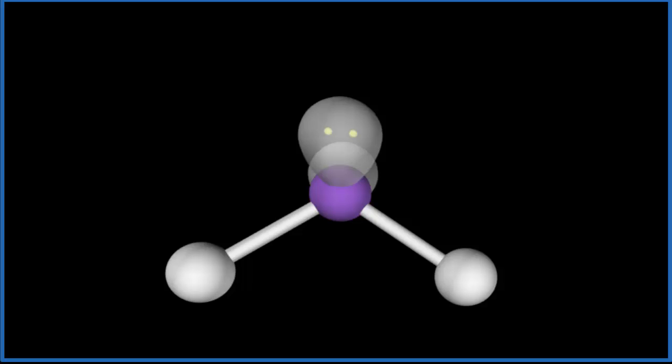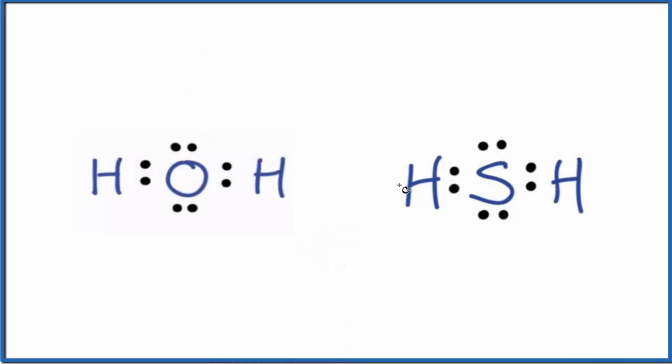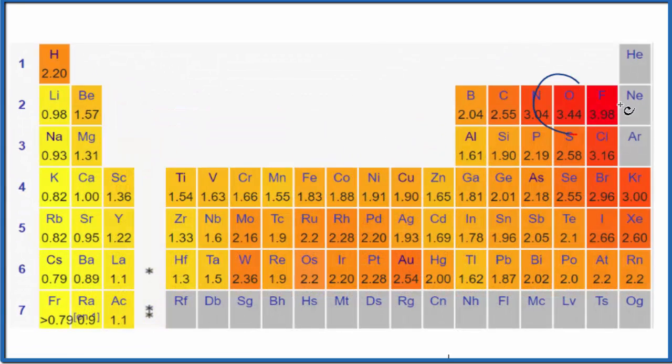Let's go back to our Lewis structure. So same Lewis structure, same molecular geometry. What's different is the electronegativity on the oxygen and the sulfur. So if we go to the periodic table, we look up values for electronegativity. Here's oxygen 3.44 and right below it is sulfur 2.58. So oxygen is more electronegative than the sulfur.